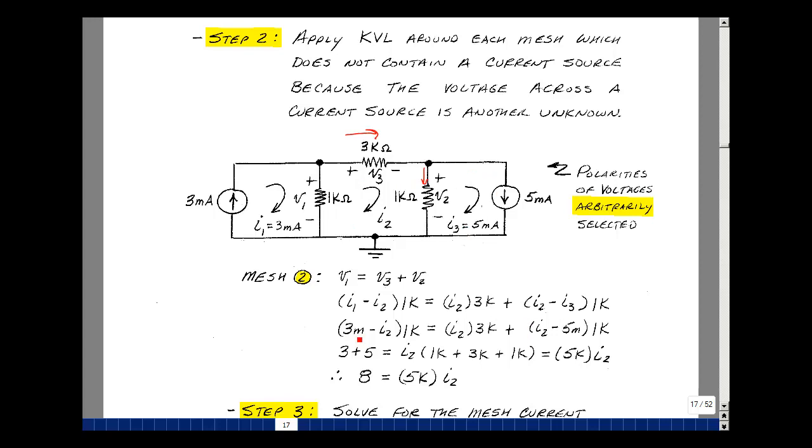But we know that I1 is 3 milliamps and I3 is 5 milliamps. So let's multiply this out. So 1k times 3 milliamps is 3 volts. I also have 1k times 5 milliamps on this side, which is 5 volts. I'll put it on your side of the equation. Bring the things that multiply I2 back on the right-hand side, and that's going to be 1k, 3k, and then another 1k. That's 5k. 8 is equal to 5k times I2.